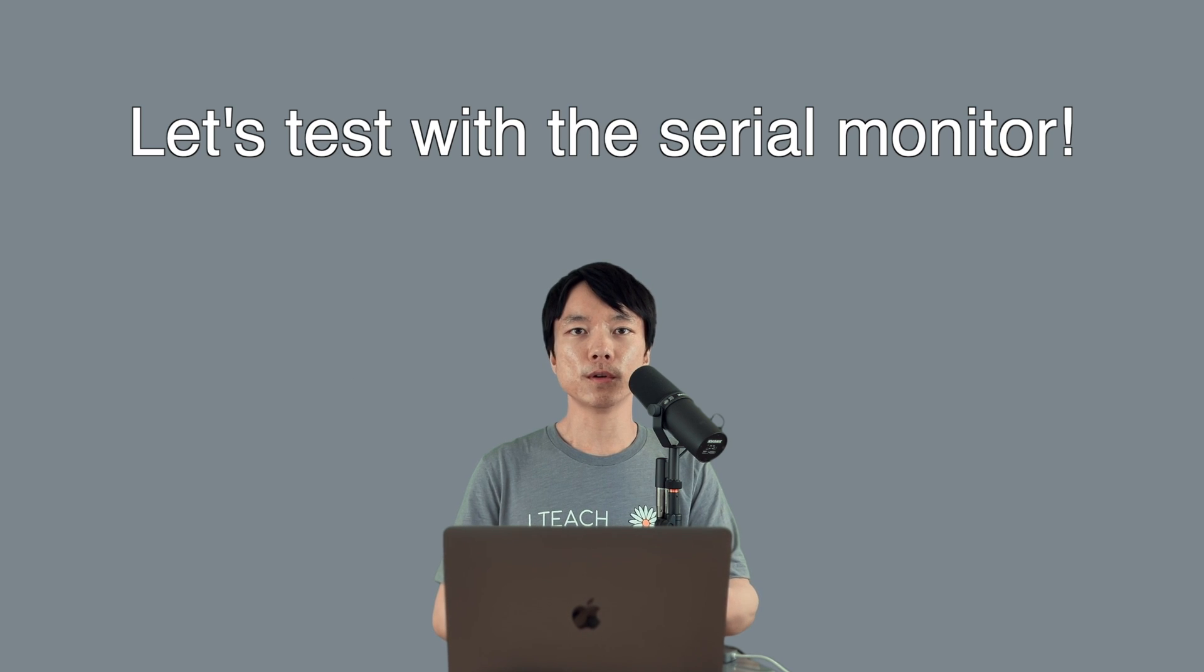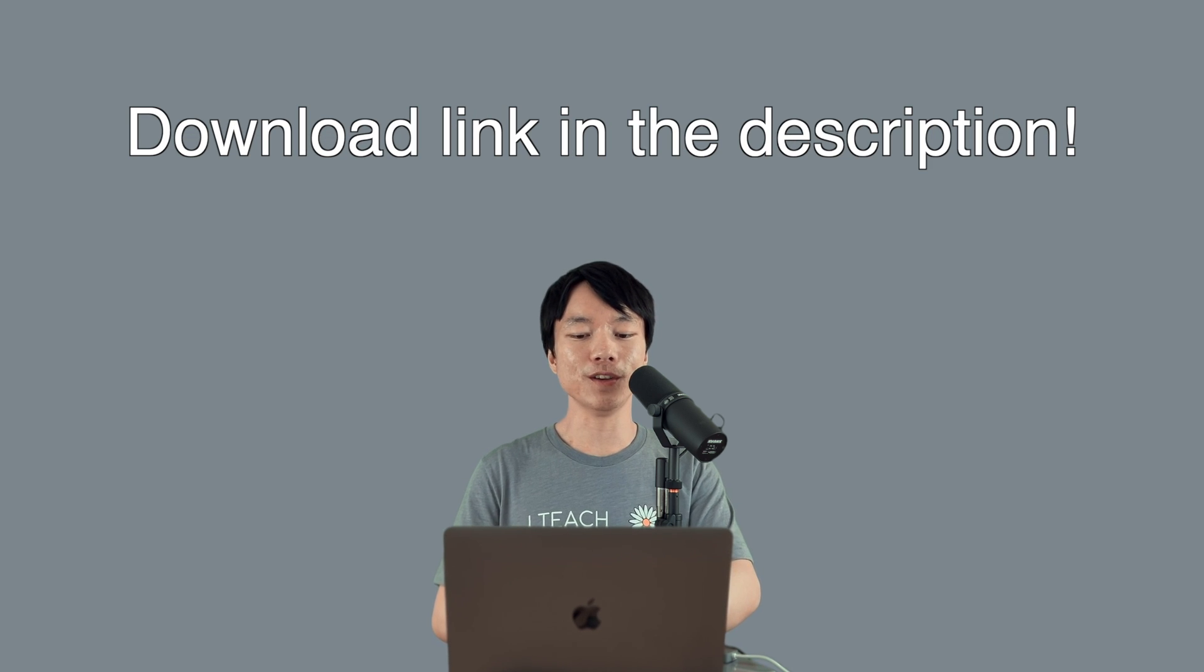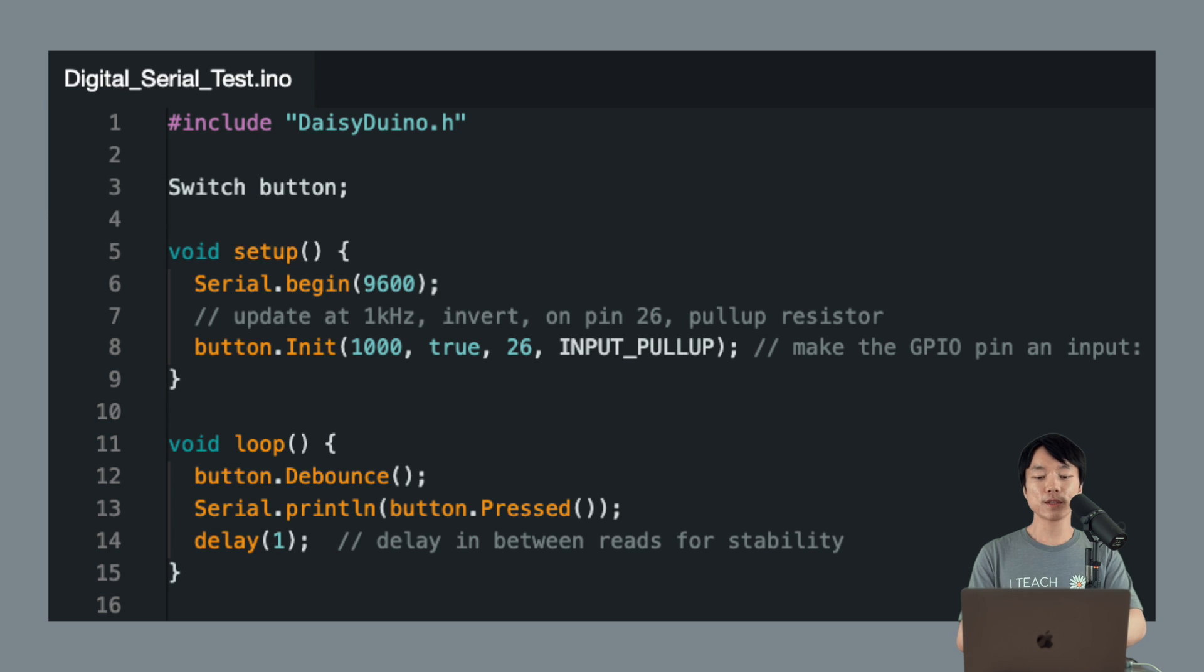Similar to the previous tutorial, let's use a serial monitor to make sure that the button is working. The code is available to download for your convenience. We'll use the switch class that comes with the DAISY-DUINO library. So in order to use it, we need to have the line INCLUDE DAISY-DUINO.H. Then we'll add SERIAL BEGIN 9600 so that we can use the serial monitor.